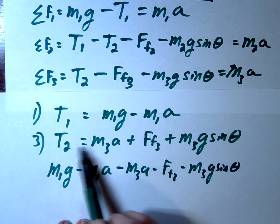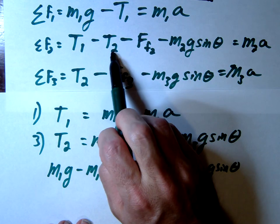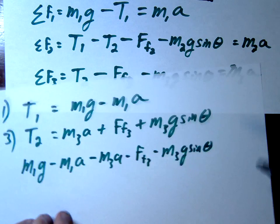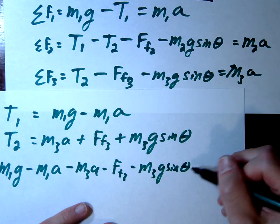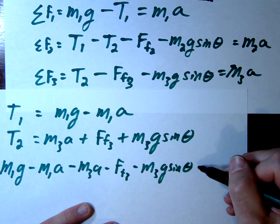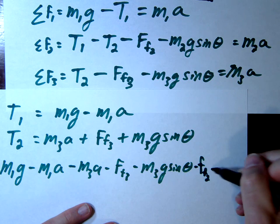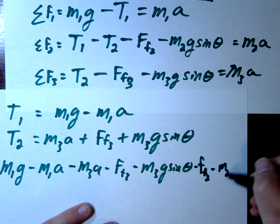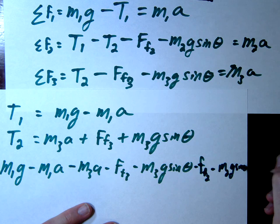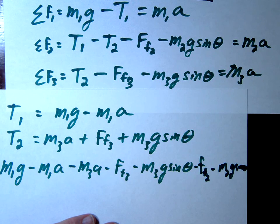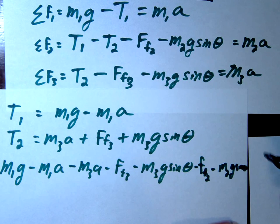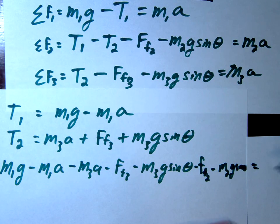T2, we made that sub into here. And then we'll just finish it up. I'm going to run out of space. Minus friction 2 minus M2G sine equals M2A. What a mess.